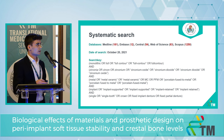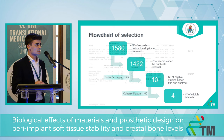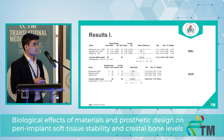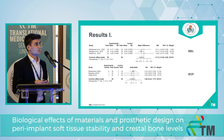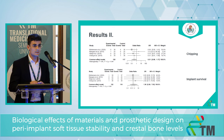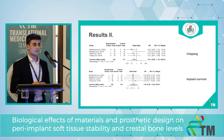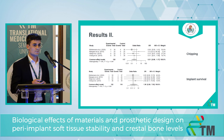After searching the relevant databases and completing selection, we obtained four eligible RCT articles. The results show that there is no statistical significance between the two groups; however, there are some benefits of the monolithic group in terms of bone loss, bleeding on probing, and chipping. This supports our hypothesis that monolithic zirconia could be a really good alternative restoration material, and it ultimately depends on the clinician which type of material to choose for the patient.